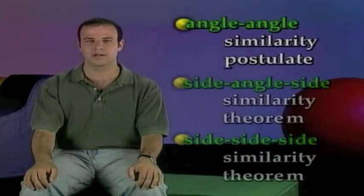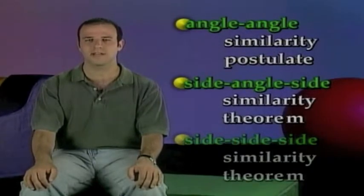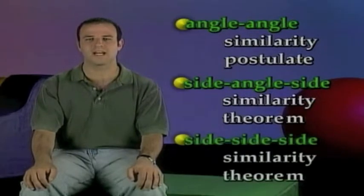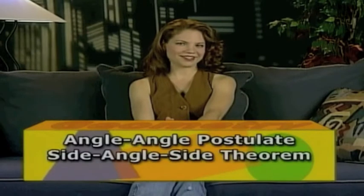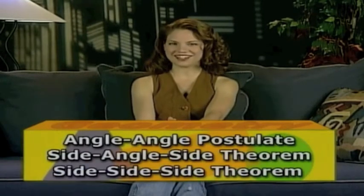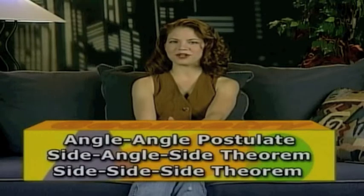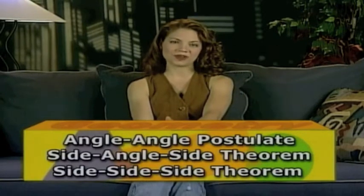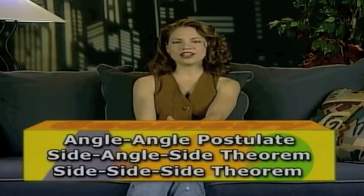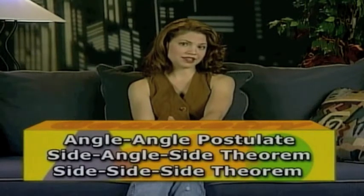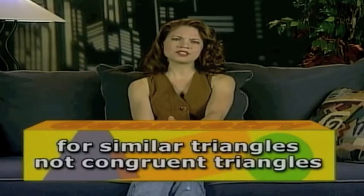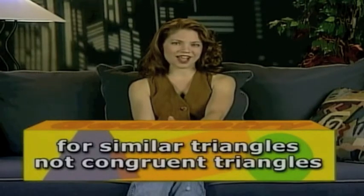There are three properties we'll use to prove that two triangles are similar. We have the angle-angle similarity postulate, the side-angle-side similarity theorem, and the side-side-side similarity theorem. The angle-angle postulate, side-angle-side theorem, and side-side-side theorem are a lot like the other theorems we use to prove triangles congruent. We can still divide polygons into triangles and use the similarity postulates like we did with the congruent postulates, but remember that these are for similar triangles, not congruent triangles.